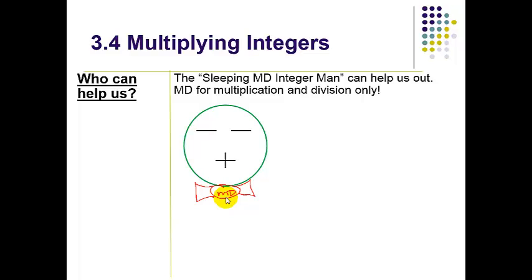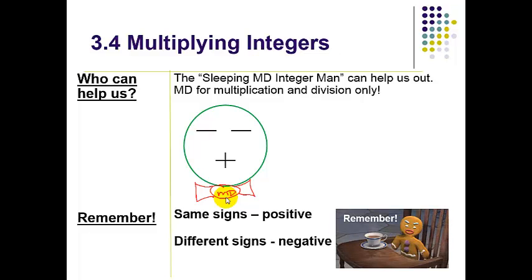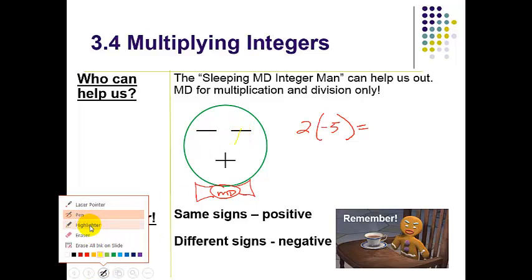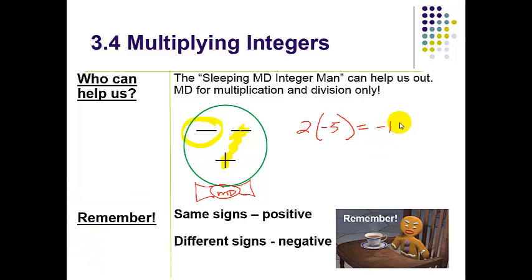So here's an example: if I had 2 times negative 5, the way that the Integer Man works is—if I was to cover up the positive and the negative with a highlighter—I was to cover up a negative and a positive, I'm going to be left with a negative. So what I'm left with is your final answer, so it's negative 10. So again, I'm covering up: I have one positive and one negative, my answer is going to be negative. But if you just remember same signs positive, different signs negative, you'll get that as well.